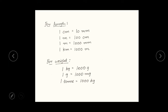For length, they have given conversion as 1 centimeter is equal to 10 millimeter, 1 meter is equal to 100 centimeter, 1 meter is equal to 1000 millimeter and 1 kilometer is equal to 1000 meter.